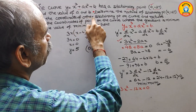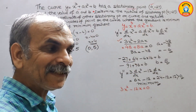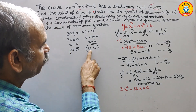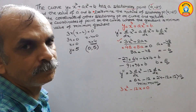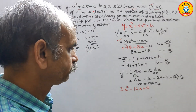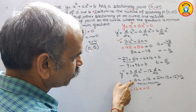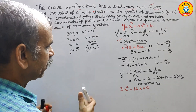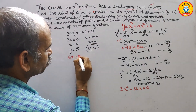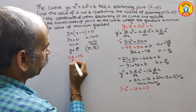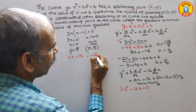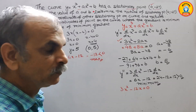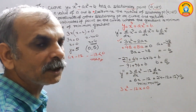We have found the coordinates of the other stationary point as (0, 5). To determine its nature, we substitute x equals 0 into the second derivative 6x minus 12, giving minus 12. Since minus 12 is less than 0, the point (0, 5) is a maximum point.